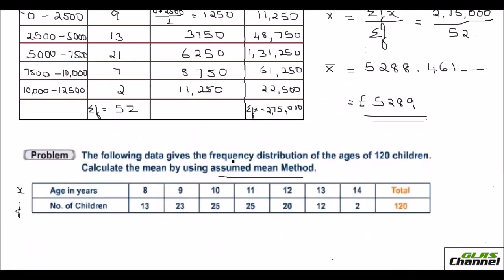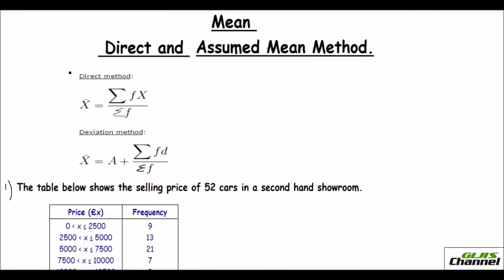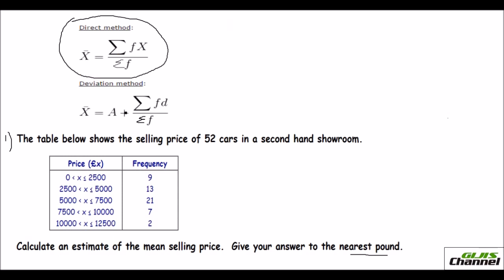Let me repeat the formula for both methods. For the direct method: find the product of frequency and x, find the total sigma fx, then divide by the total frequency sigma f to get the mean. For the deviation method: take your assumed mean, add sigma fd — frequency times the deviation, not the mid value — divided by sigma f. Whatever result you get, add or subtract it from the assumed mean to get your answer.